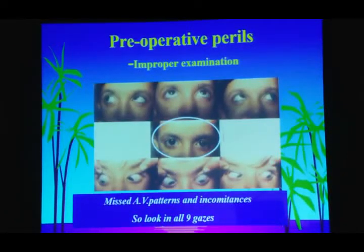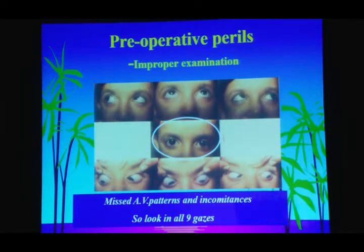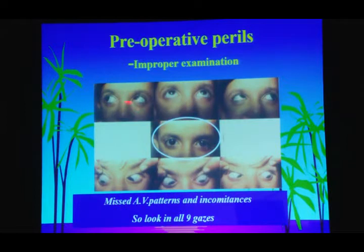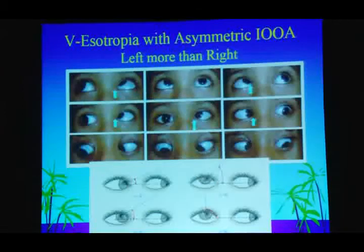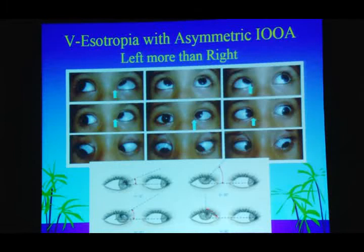When we look at the eyes, it's not just the primary position that matters. The moment a child looks up, deviations change; looking down can reveal eso or exo deviations. Inferior oblique overaction on either side causes this mischief — identify it and you get proper correction. They may be asymmetric, requiring asymmetric treatment. It's a symmetrizing surgery in squint, not always a symmetrical surgery.